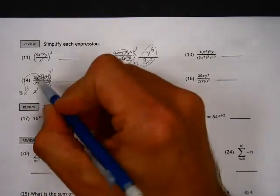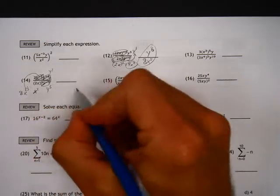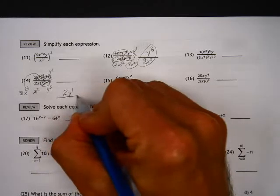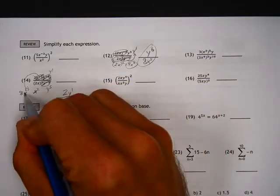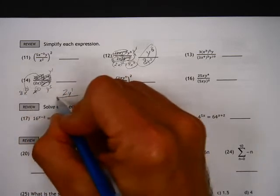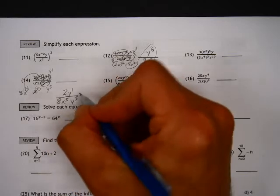I've got this 2 still on top. I'm going to rewrite everything that I have so far. I've got a 2y to the first on top. And I've got this 8. And I've got x to the third, x to the squared. Together, that's going to give me an 8x to the fifth power. But I've still got this y to the fifth on the bottom.